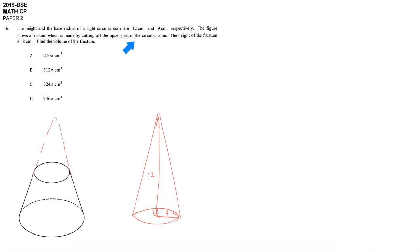We cut the upper part such that the height of the frustum, the remaining part, is 8 cm. Note that we're talking about the frustum height being 8 cm, not the cut part. So from 12 cm, 8 cm is left, which means we cut 4 cm.